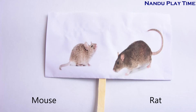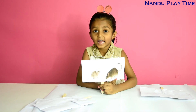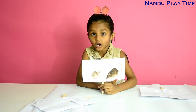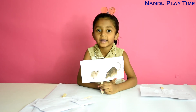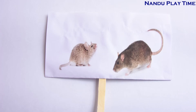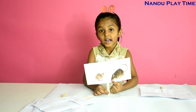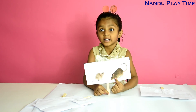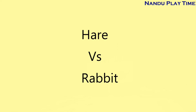Mouse has a long hairy tail but rat has a short tail with no hair.